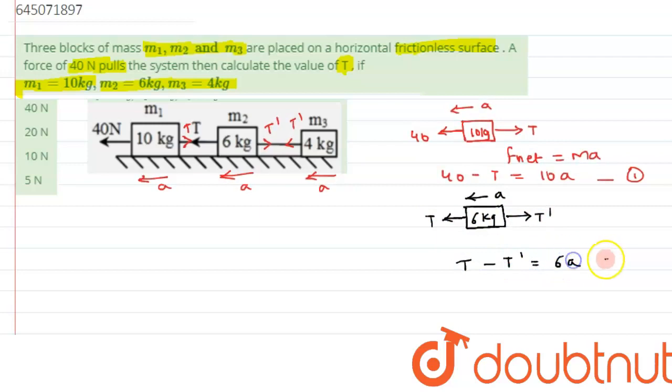So we can write t minus t dash will be equals to 6a. Let's suppose this is our equation number two. And finally we can draw the free body diagram for third block, and let's draw it over here.